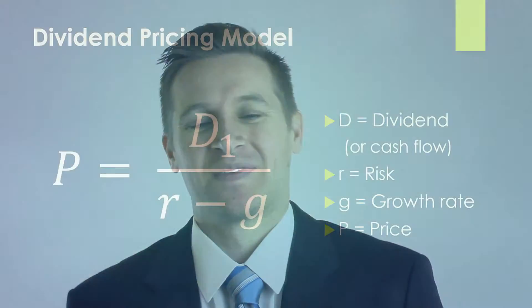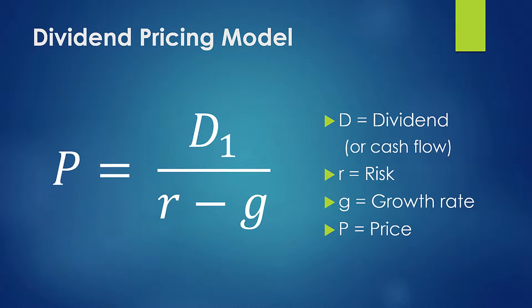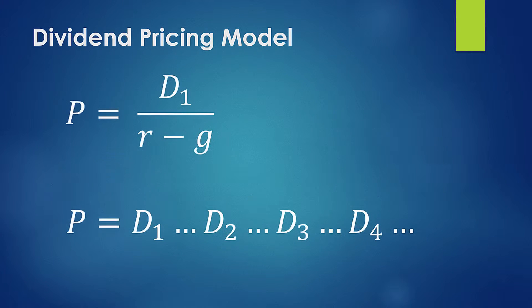So what does that have to do with the dividend pricing model? Let's look at the math. We're talking about a string of dividends, or a string of cash flows, out into the future, and we're trying to figure out a price — an appropriate value — that we'd be willing to pay for this opportunity to collect these cash flows. You're going to receive your first dividend, second dividend, third dividend, fourth dividend, out into the future, and those dividends are specific values.